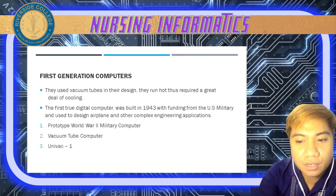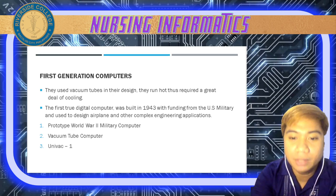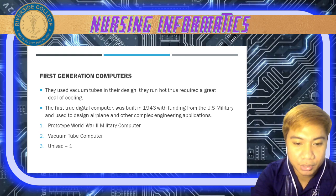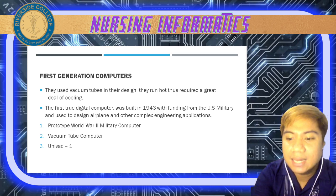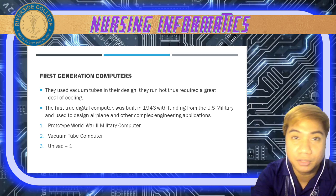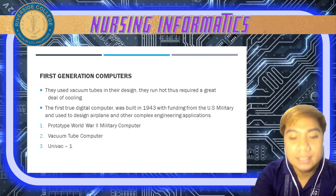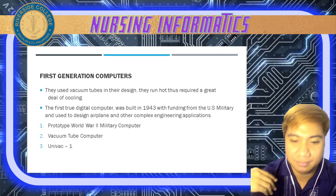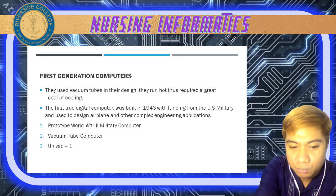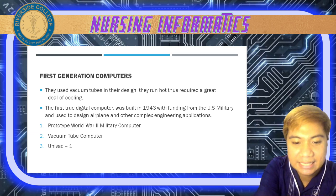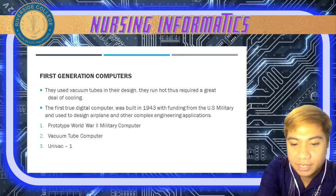These first generation computers were big, much less powerful than any ordinary computer we use today, and could handle relatively few operations. They were difficult to program — it was done by scientists and the approach was slow, tedious, and impractical for a commercial machine. We also have the vacuum tube computer also known as ENIAC, made by Eckert and Mauchly Corporation.